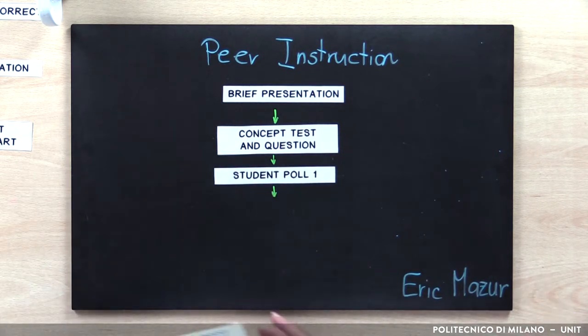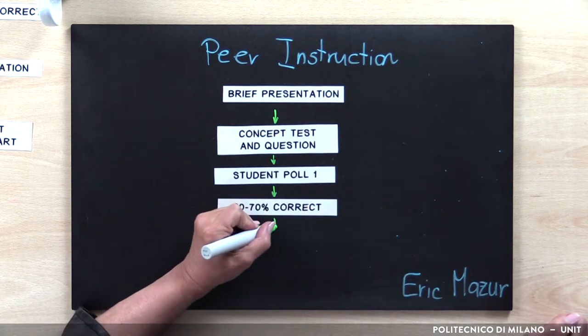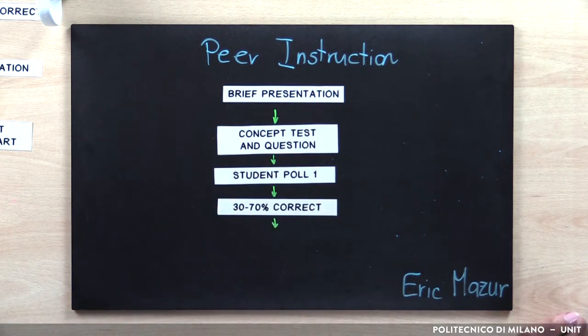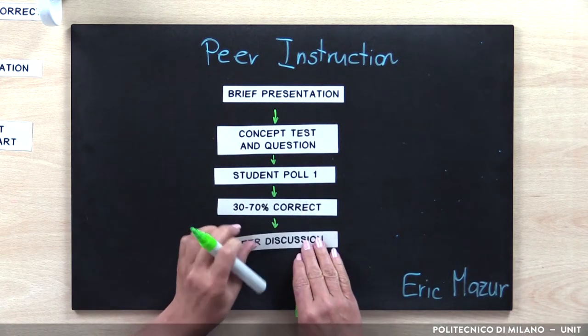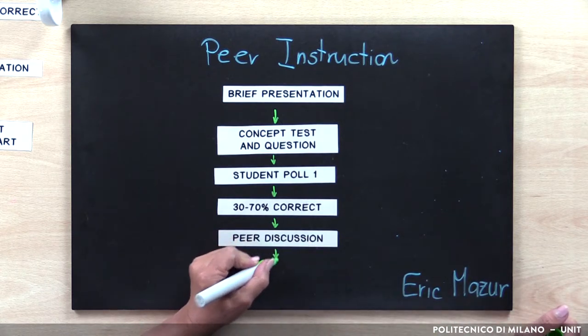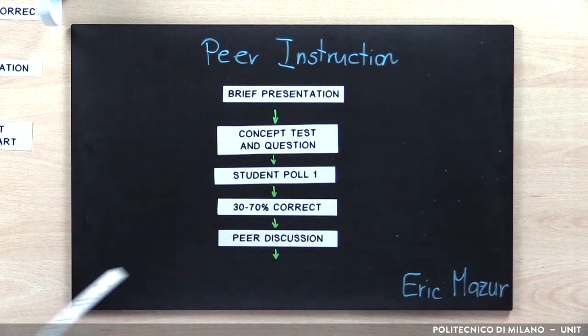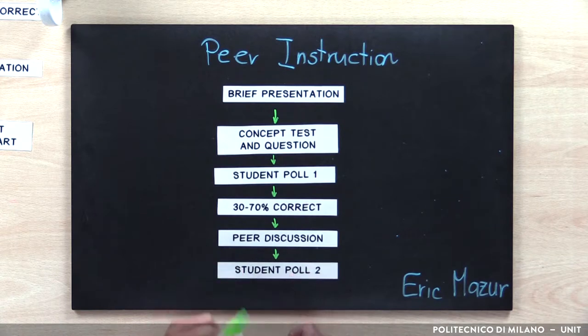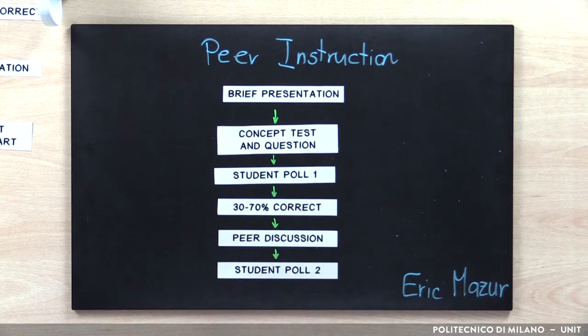The instructor reviews student responses. Then students discuss their thinking and answers with their peers having a different answer. Students then vote again to an individual answer, and the instructor again reviews responses and decides whether more explanation is needed before moving on to the next concept.